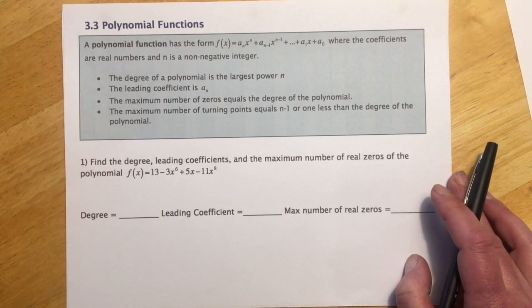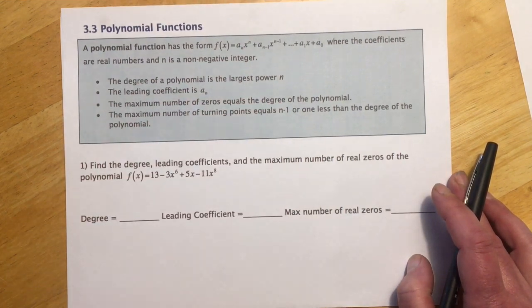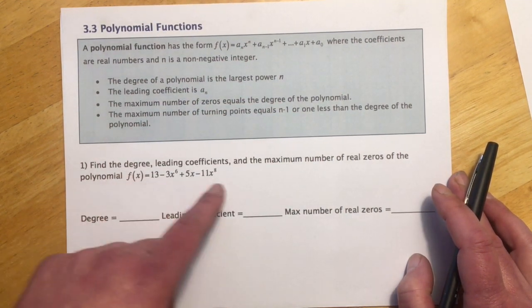The important features are: one, the degree of the polynomial, which is often referred to as n, and it's going to be the highest power of the polynomial.